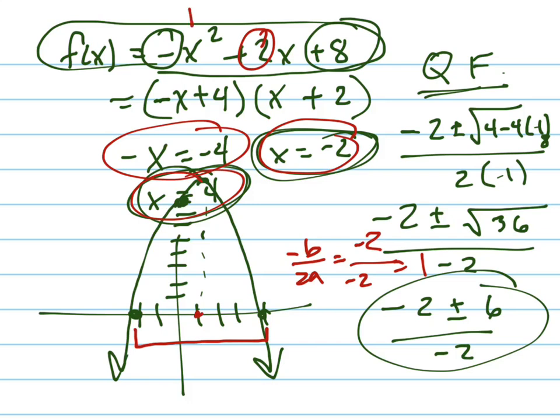Plug that back in to find the y-coordinate. You've got 10 minus 1, which is 9. So your vertex is at 1, 9. That's your vertex up there. I apologize for all the messiness. But there's your graph. Your zeros and your vertex. And that's how you do it.